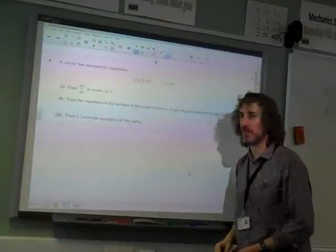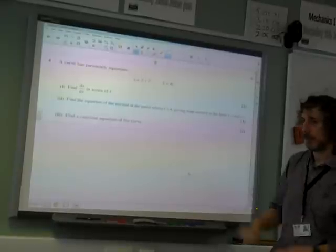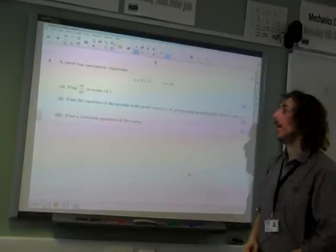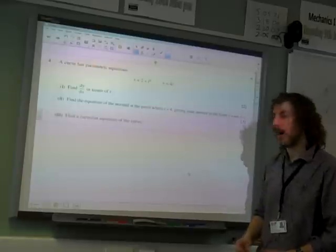A curve has parametric equations x equals 2 plus t squared, y equals 4t. Find dy by dx in terms of t.